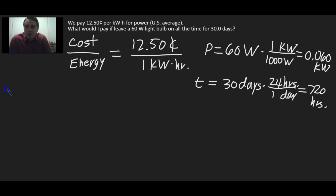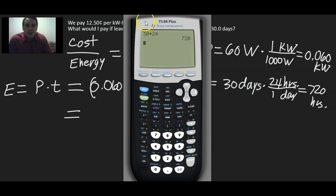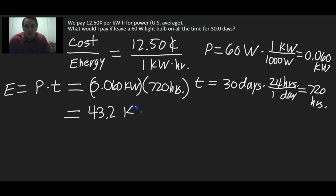Okay, so now let's get the energy used by running this bulb, 60-watt bulb, for 30 days. So that's going to be power times time. The rate at which energy is used times the time over which the energy is used for. So that's going to be the multiplication of these two numbers. 0.060 kilowatts times 720 hours. So we have 43.2 kilowatt hours.